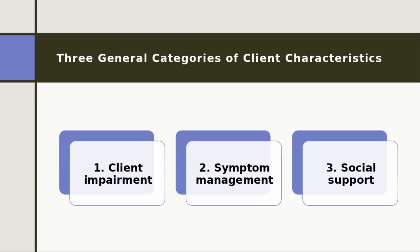Those factors can really be distilled down to three things. First, client impairment — their level of symptomatology and their level of disability as a result of their symptoms. Second, their symptom management — how do they express their symptoms and what is their level of resistance or reactance to therapy? And third, their social support — what is their social support system like?